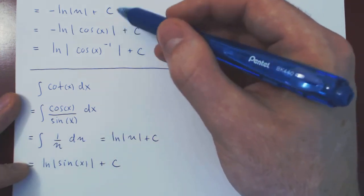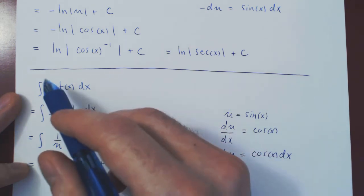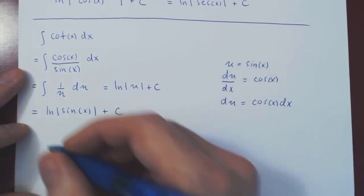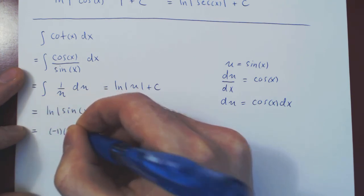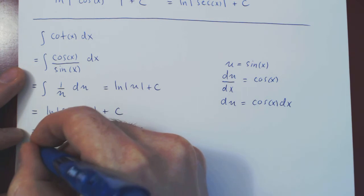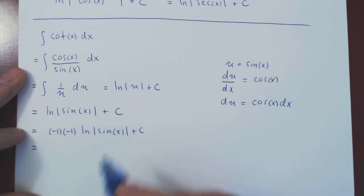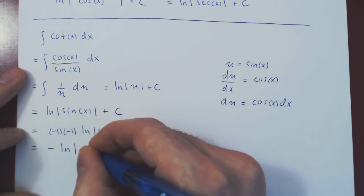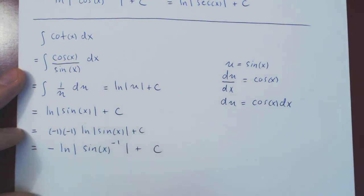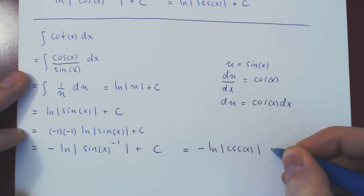We want to mirror the derivative relationship: the derivative of cot is negative cosecant squared. So we bring in a double negative — negative 1 times negative 1 equals 1 — and bring one negative inside the logarithm as an exponent: negative ln of sin x to the negative 1. Since 1 over sin x is cosecant x, our final answer is negative ln of |csc x| plus c.